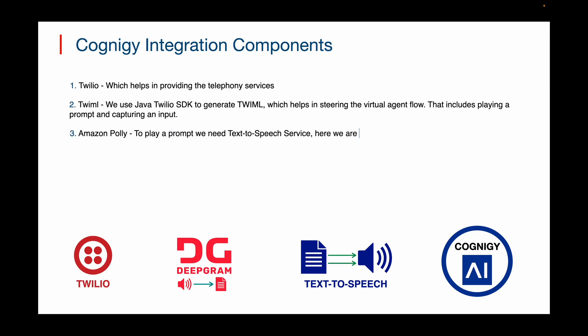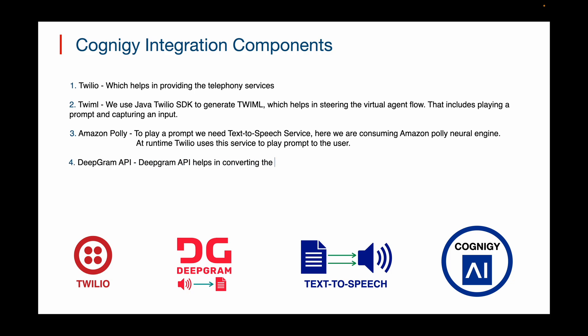3. Amazon Polly — to play a prompt we need a text-to-speech service. Here we are consuming the Amazon Polly Neural Engine. This TTS service helps to convert text to speech as an audio stream. 4. Deepgram API — this Deepgram API helps in converting the user utterance to transcribed text, that is a speech-to-text service.